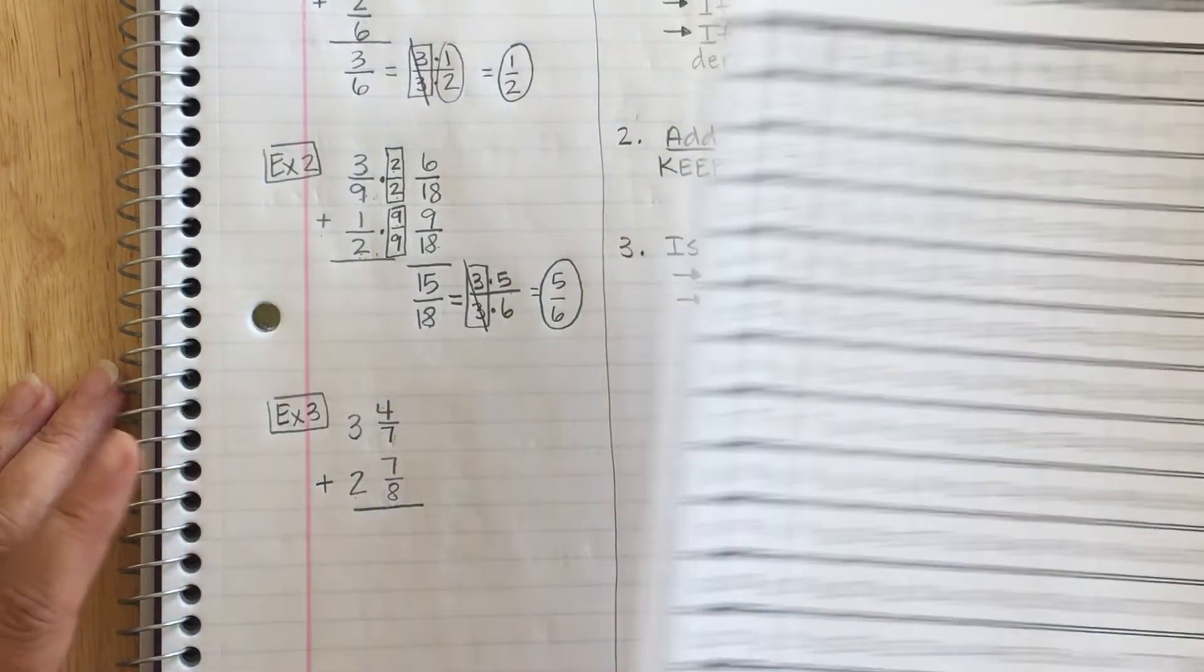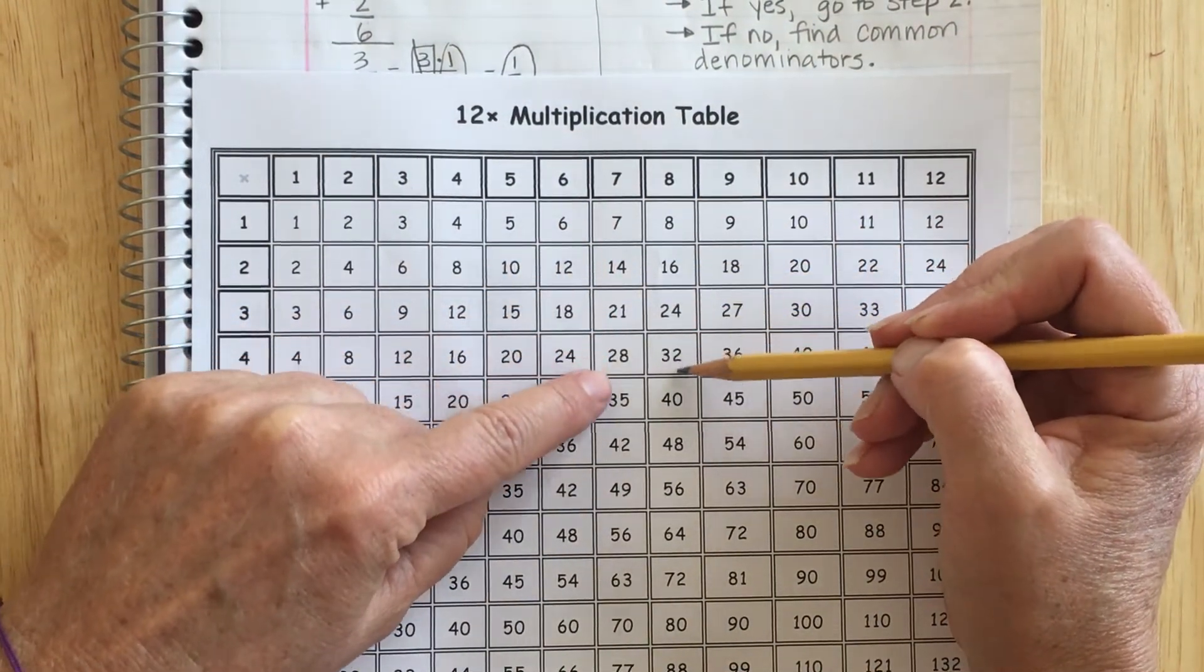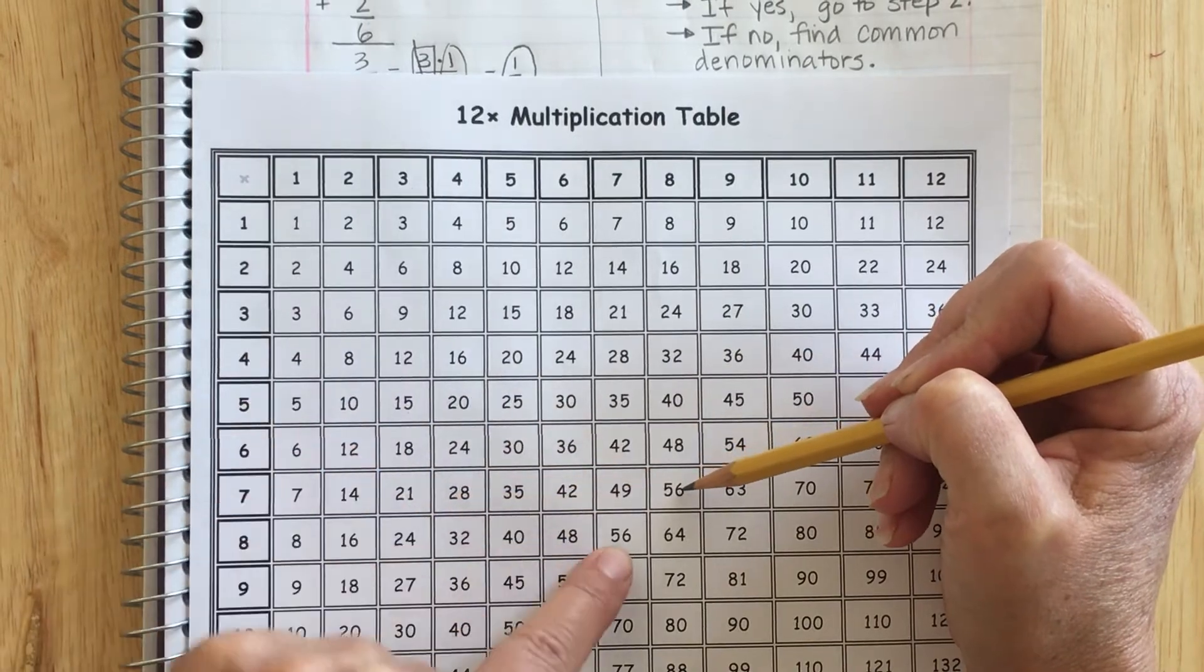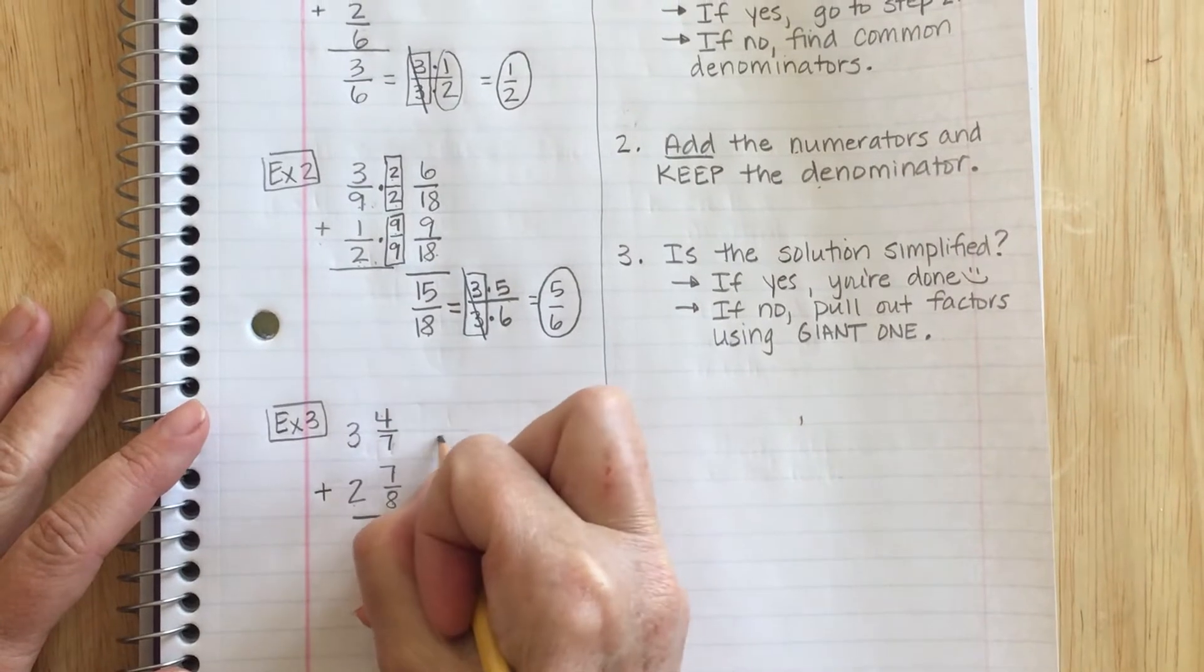So I'm going to go ahead and take a look for my least common multiple. Start in the 7s and the 8s. And I'm going to look for numbers that look similar, they're the same. Oh, look at that. They both go into 56. So 56 is going to be my common denominator.